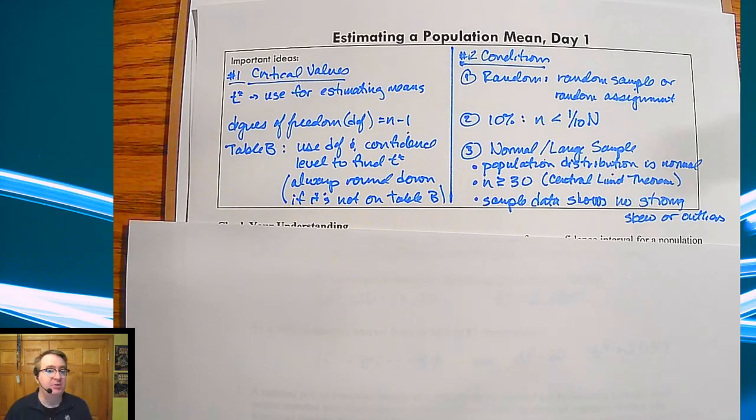And then the last one, normal or large sample. For this one you've got three different options. You can either have, if you know the population distribution is normal, then we can use it. If you make sure the sample size is sufficiently large, so at least 30 or larger, that would also work. In cases where you're less than 30, if you look at the data and there's no strong skew or there's no outliers, you can say okay looks relatively normal, that's going to be good enough for us.